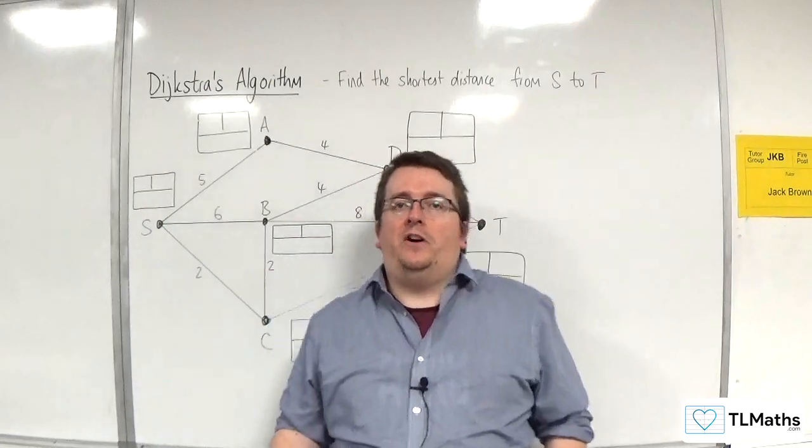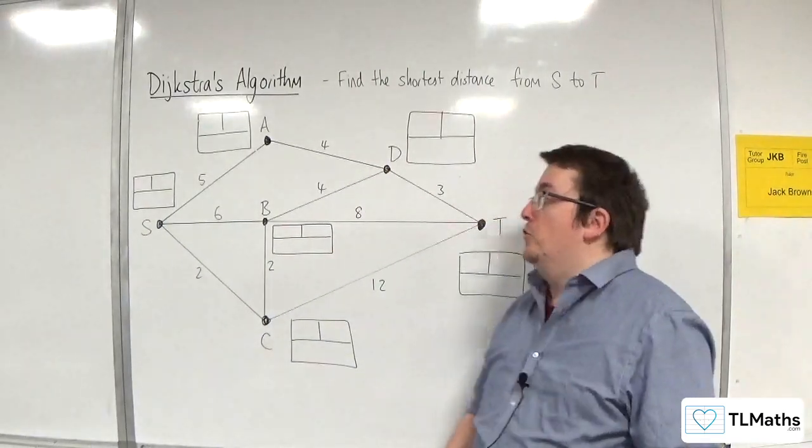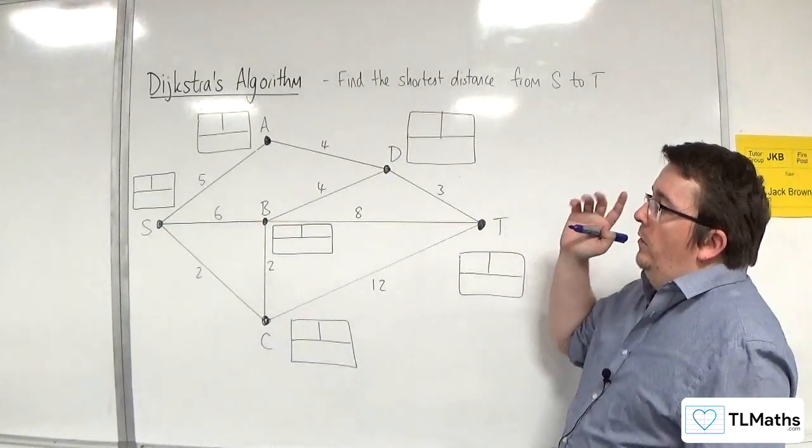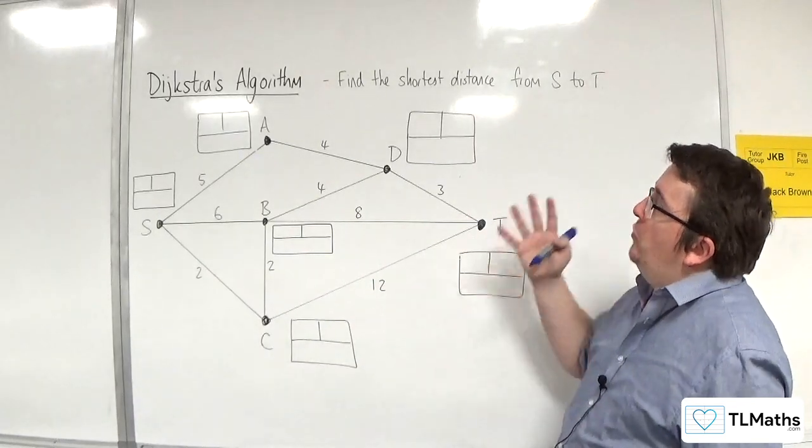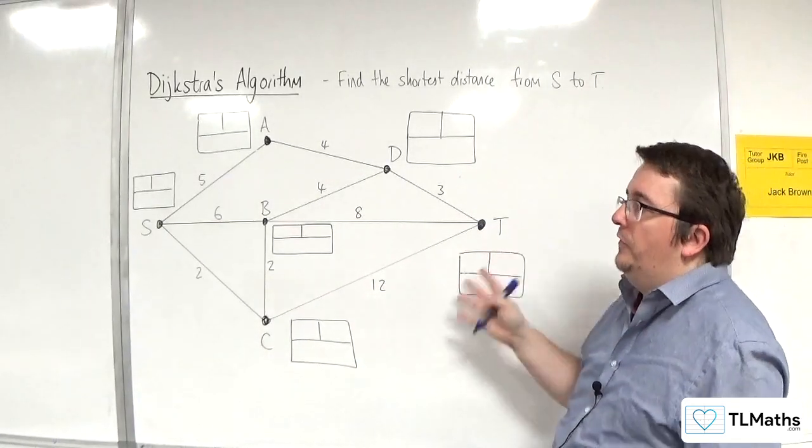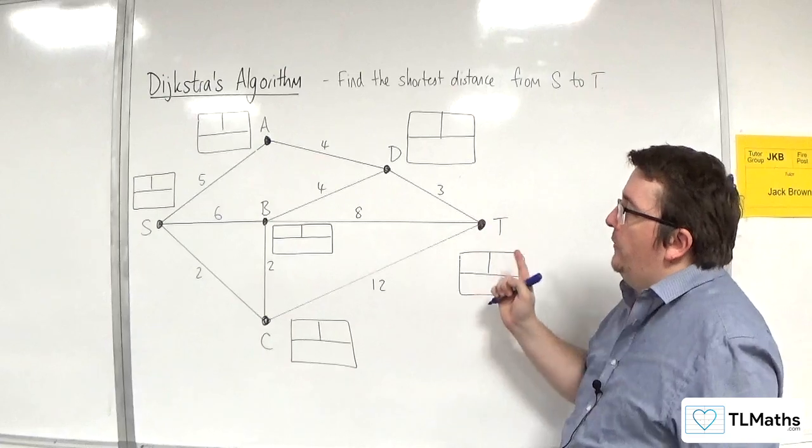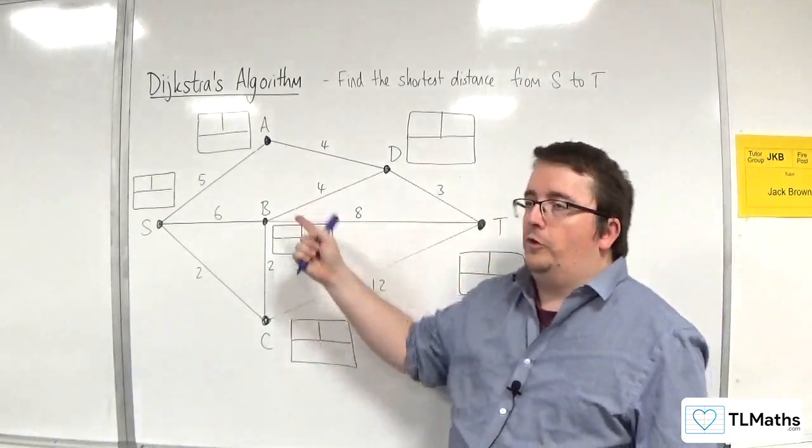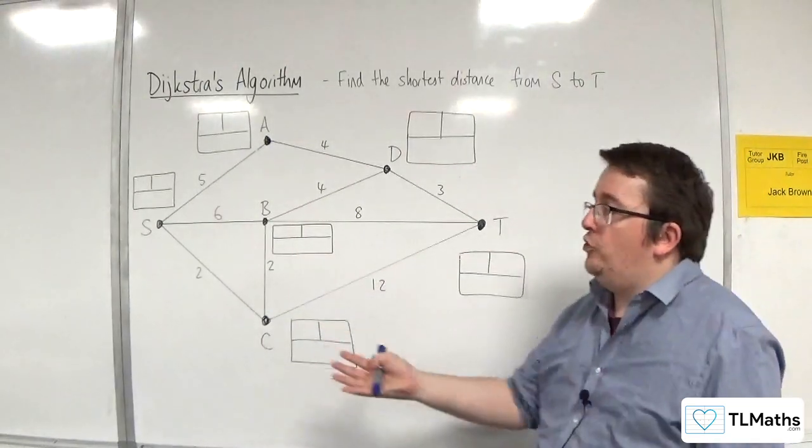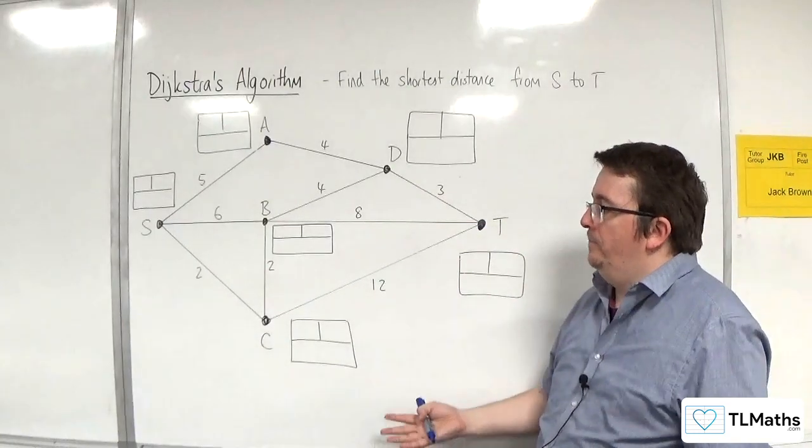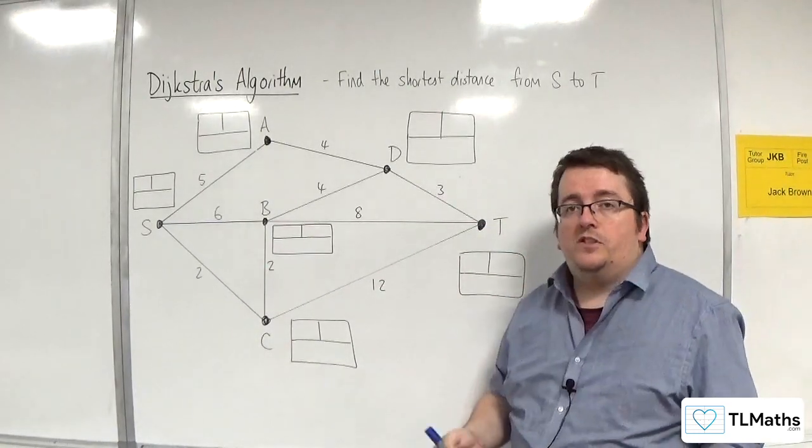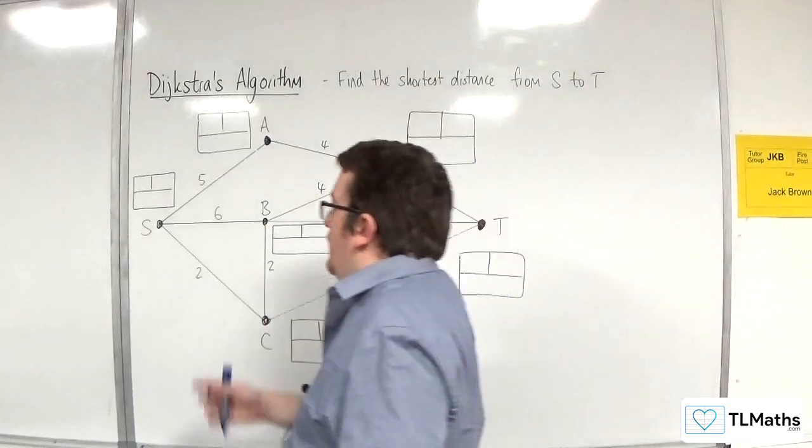In this video, we're going to see our first example of using Dijkstra's algorithm. For our network here, we're going to try and find the shortest distance from S to T. And for each of the vertices, I have drawn a box ready. In the previous video, I introduced what these boxes were and what values go where. So let's see the algorithm play out.